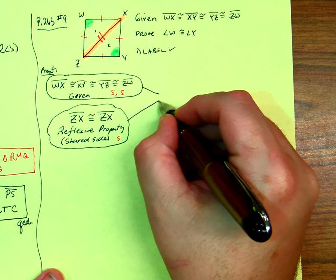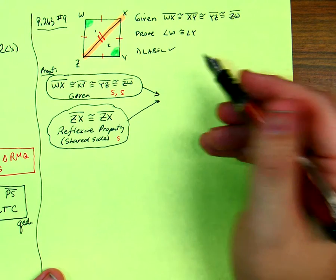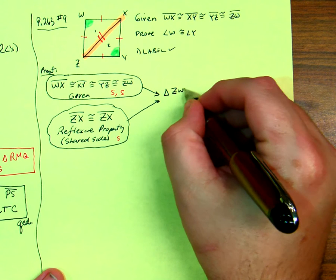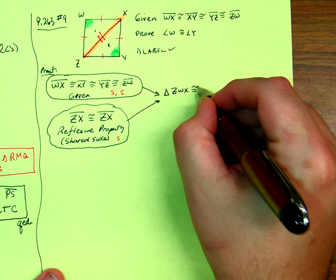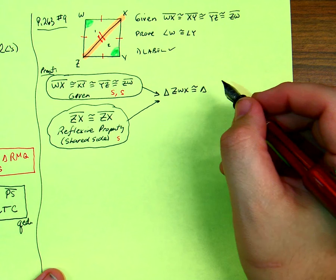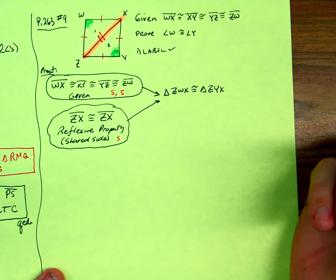So these two paths lead to our ability to say that triangle ZWX is congruent to triangle ZYX. And what's the test? Side, side, side.